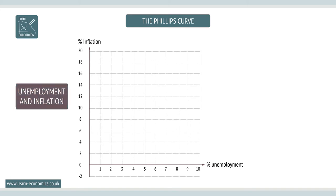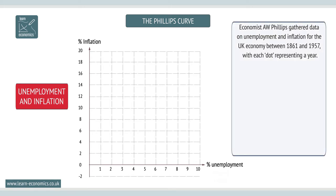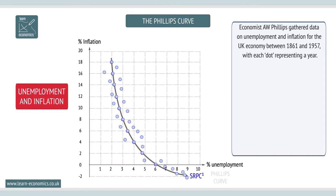In 1958, New Zealand economist A.W. Phillips published the results of his research into unemployment and inflation in the UK economy, from data gathered between 1861 and 1957. Graphically, each dot represents a year of data, with the Phillips Curve being the line of best fit for the data.